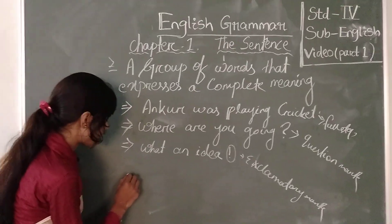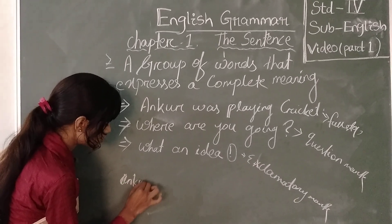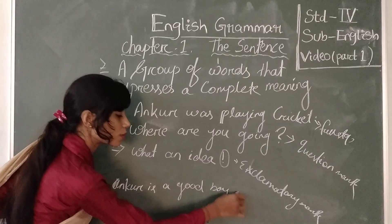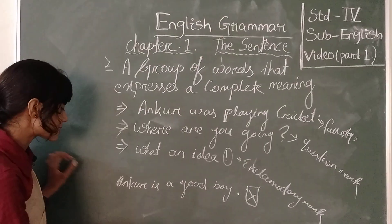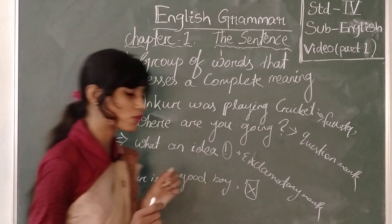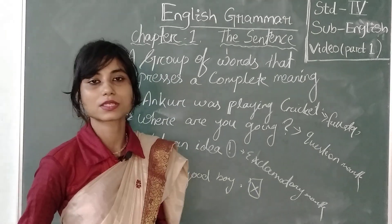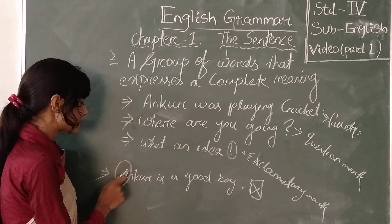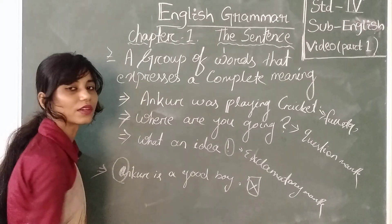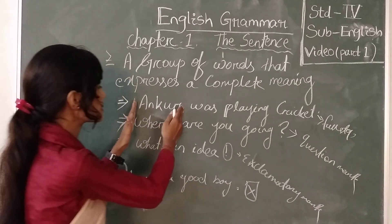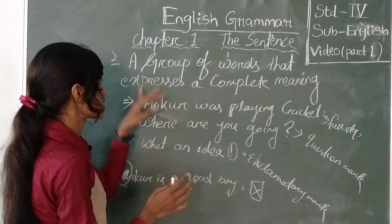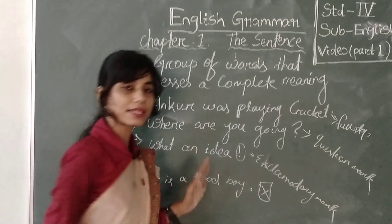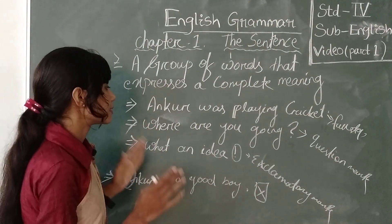Suppose I write: 'ankur is a good boy.' with a full stop — but this sentence is wrong. Why? The reason is the first letter of the sentence must be capital. Here 'Ankur' is also a proper noun, and the sentence's first letter A is in small letter. So this sentence will be wrong. Also remember a sentence contains more than one word — a group of words that expresses the complete meaning, not only one word.